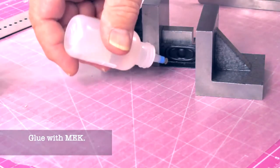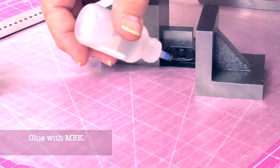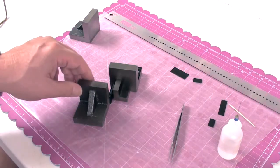I'm going to use a little bit of MEK to wick in there and tack the pieces together. You see it wick right in there and we're ready.